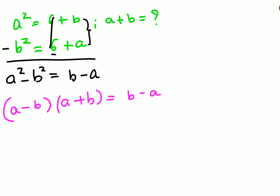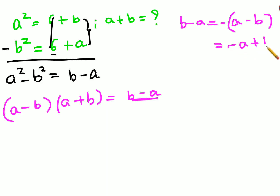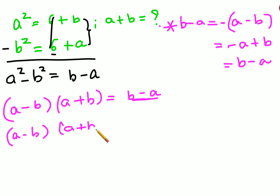Now if I want b minus a to be written in terms of a minus b, I just have to take the negative outside. Once I do that, taking the negative inside again gives me negative a plus b, which is b minus a. So b minus a can be written as negative of a minus b. So we have a minus b times a plus b equals negative of a minus b.